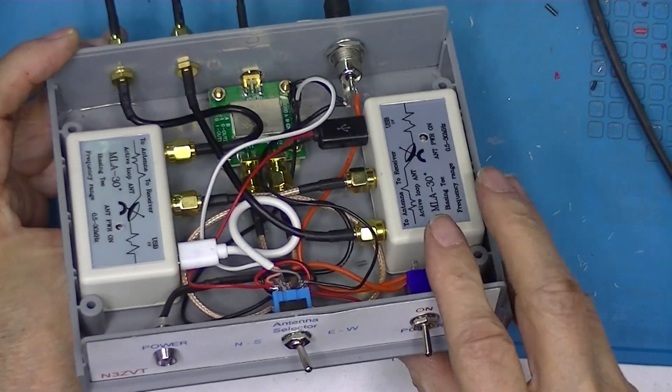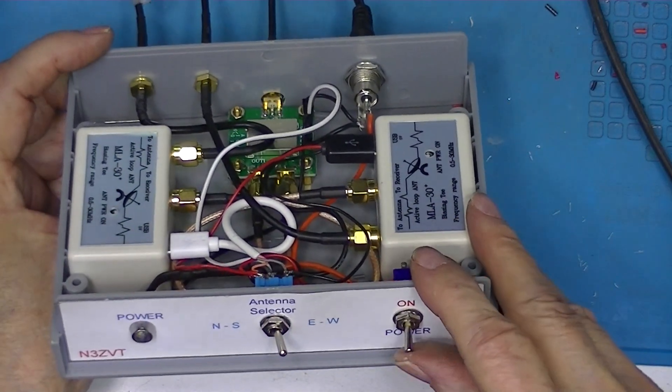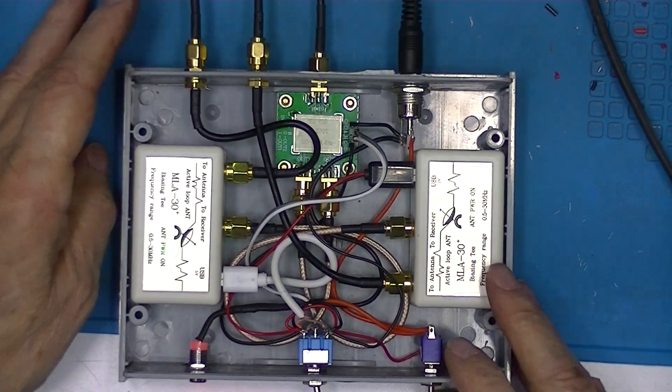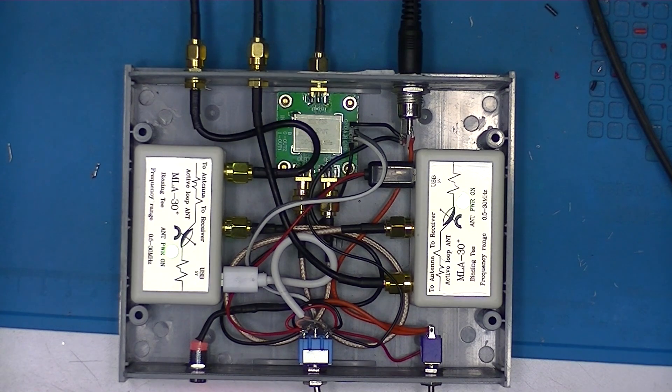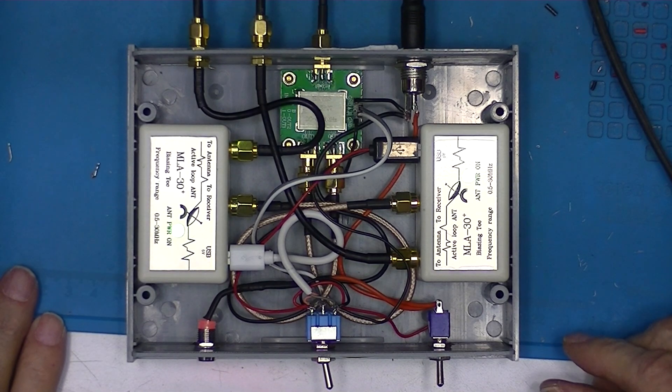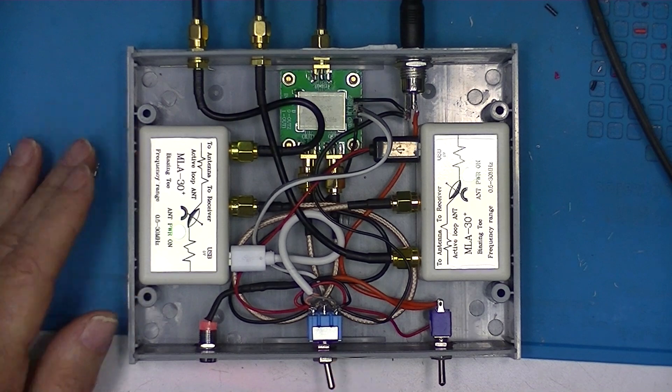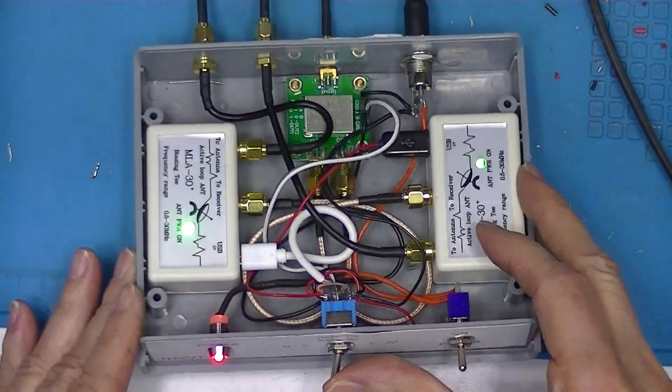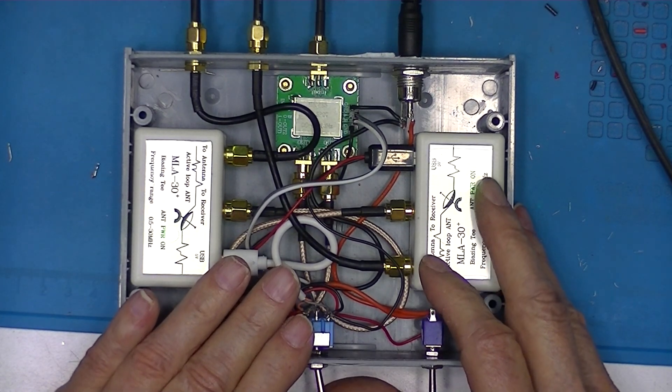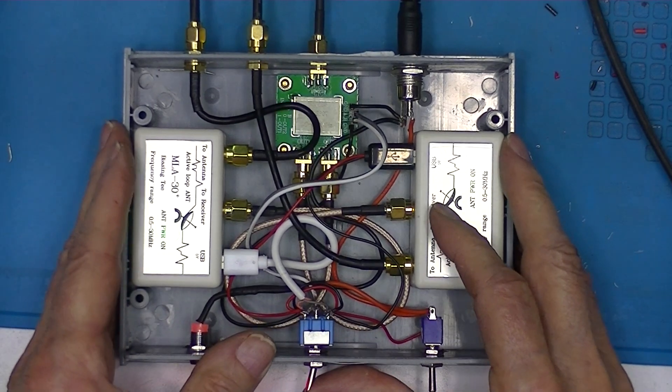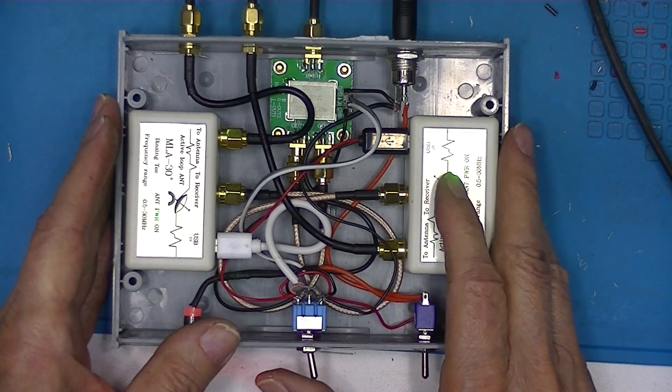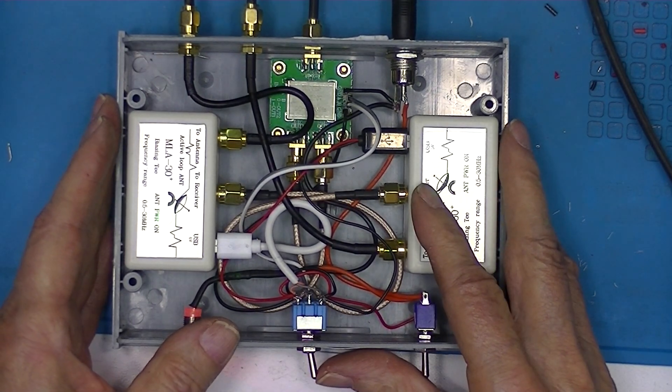Turning it off turns off everything including the two amplifiers. Right now it's got an S4 signal. I'll switch directions - right now it has about an S3, and that gives it an S5.